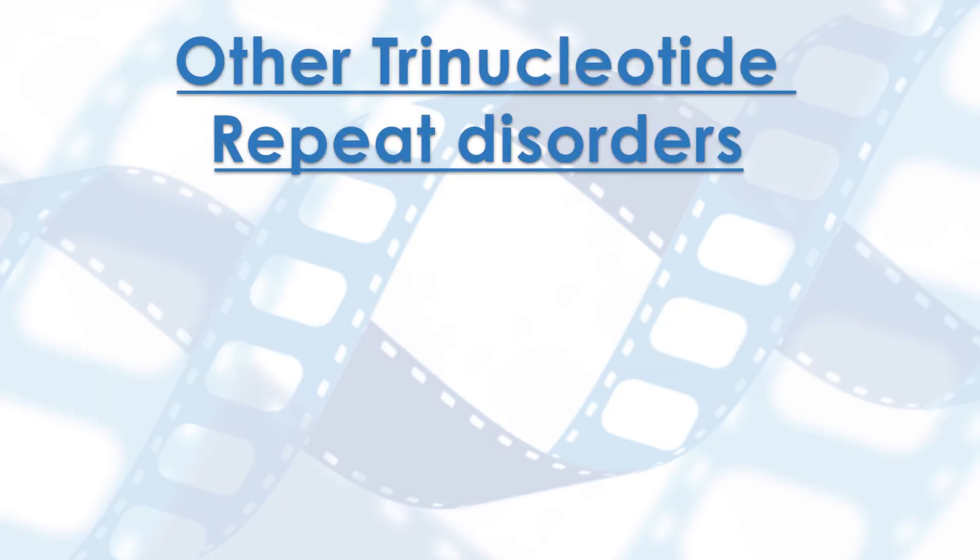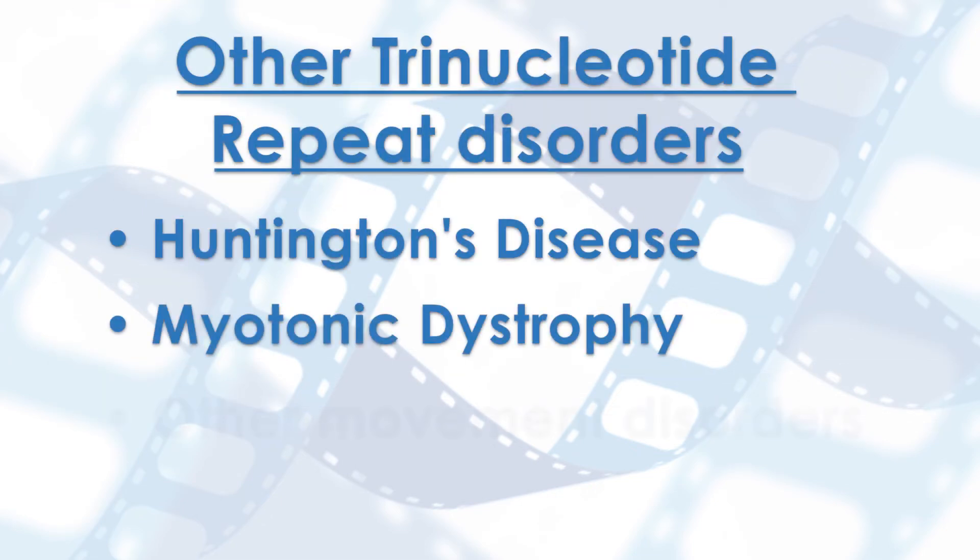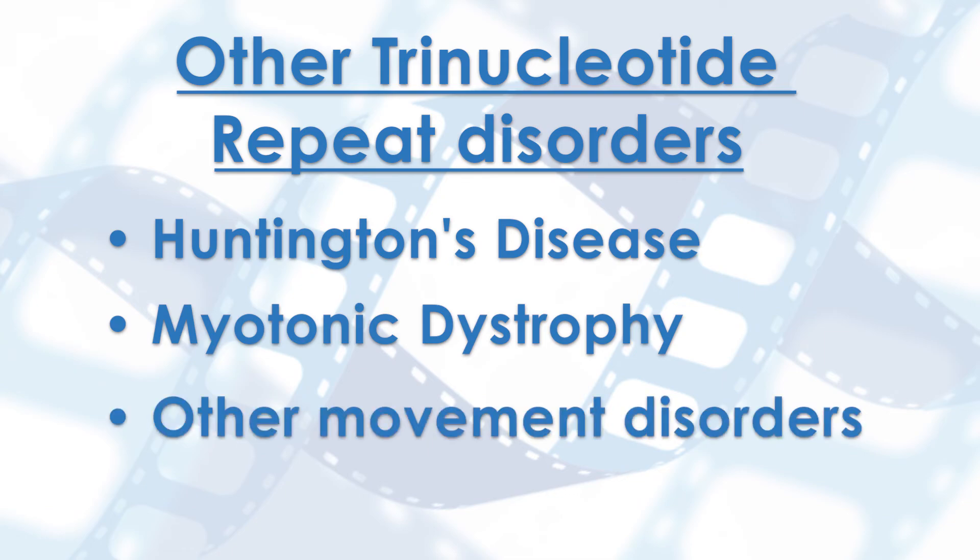Some other trinucleotide repeat disorders are Huntington's disease, myotonic dystrophy, and other movement disorders. Some trinucleotide repeat disorders have varying signs and symptoms across multiple generations in the family. Your genetics provider will likely collect a detailed family history before ordering any testing. Diagnosis typically requires a specific method of gene testing called PCR to identify the number of repeats within a gene. It is important to work with a genetics team if you or your family member show signs of these conditions.